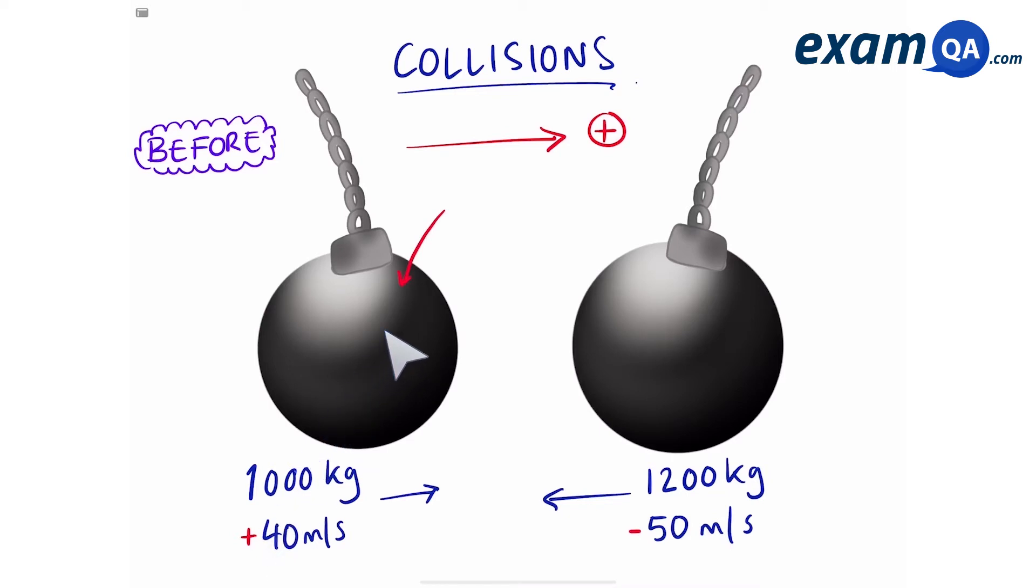So for this ball, the momentum is going to be a thousand times by 40, which gives you 40,000. And for the ball on the right, it's going to be 1,200 times by minus 50, which gives you minus 60,000.